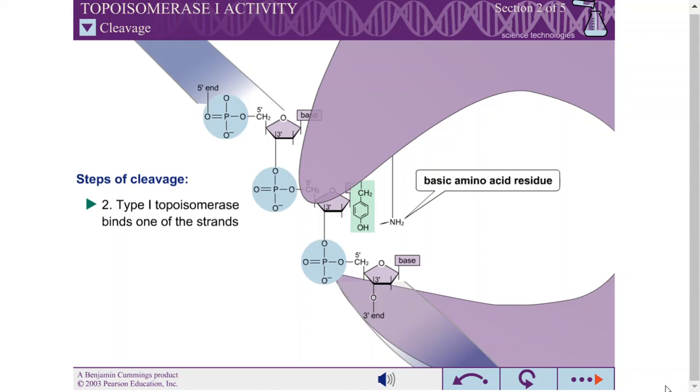The active site tyrosine becomes deprotonated, probably by a nearby basic amino acid residue. The result is a negatively charged oxyanion.